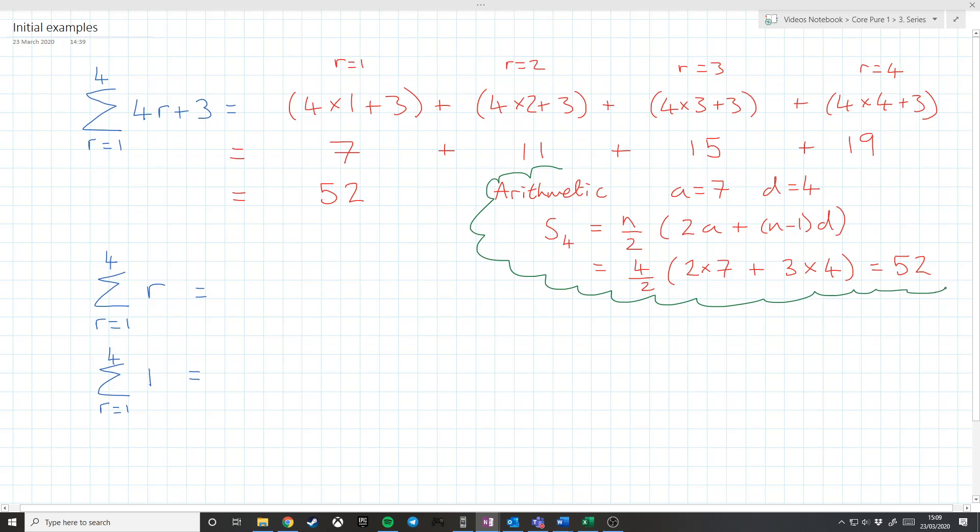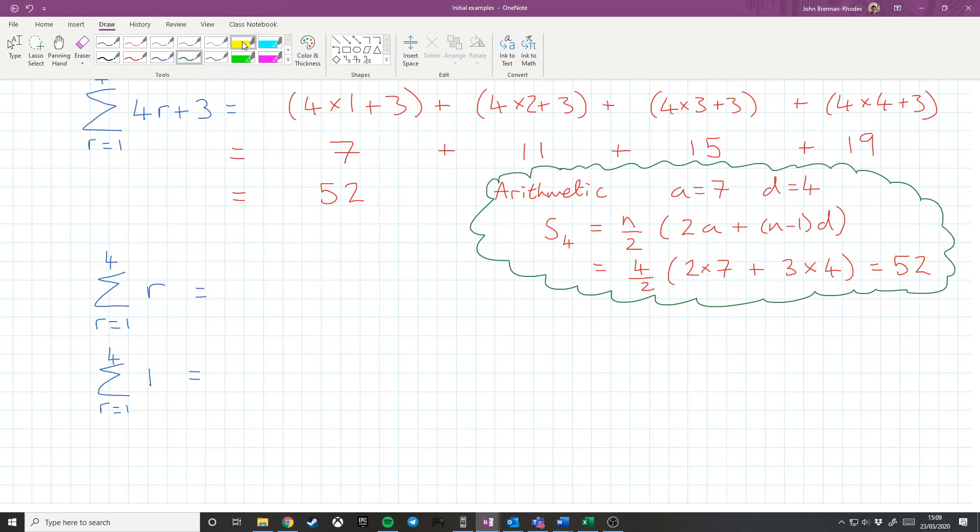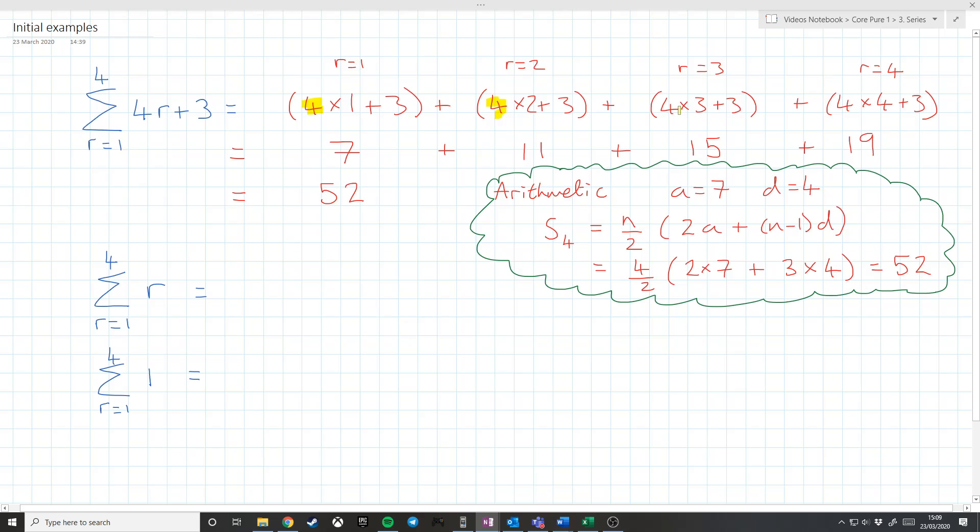But there is one other way we could approach this. We look and we can see that what we've got is 4 in every term. And I've got 1, 2, 3, and 4 there, giving a total of 10. So this is also 10 times 4 plus 1, 2, 3, 4 times 3, because I could add them up like that in a different way.